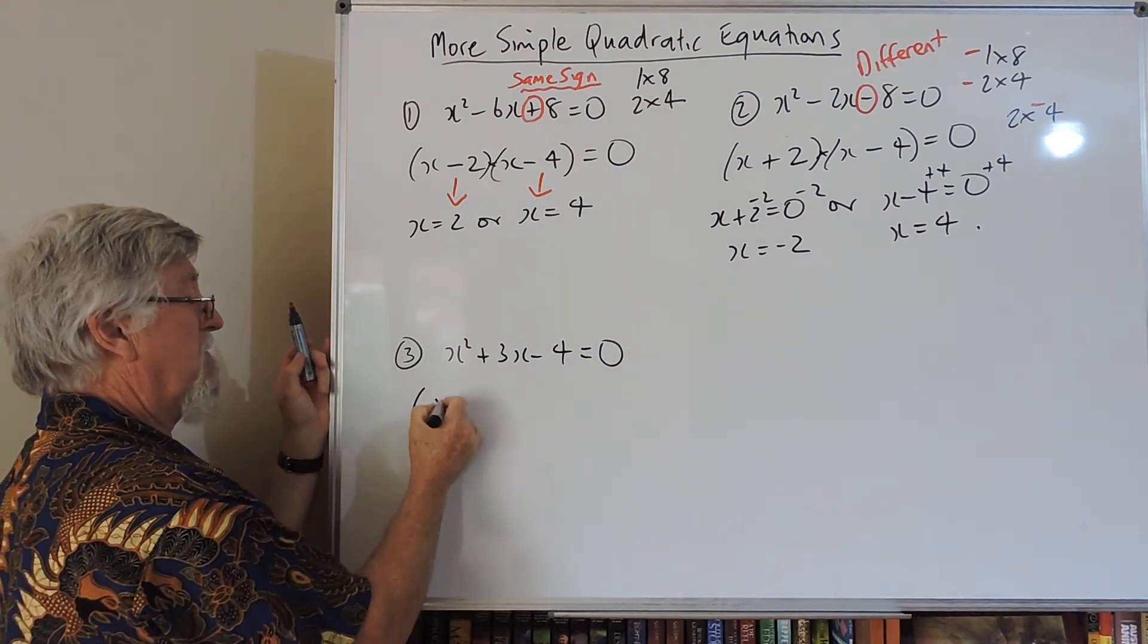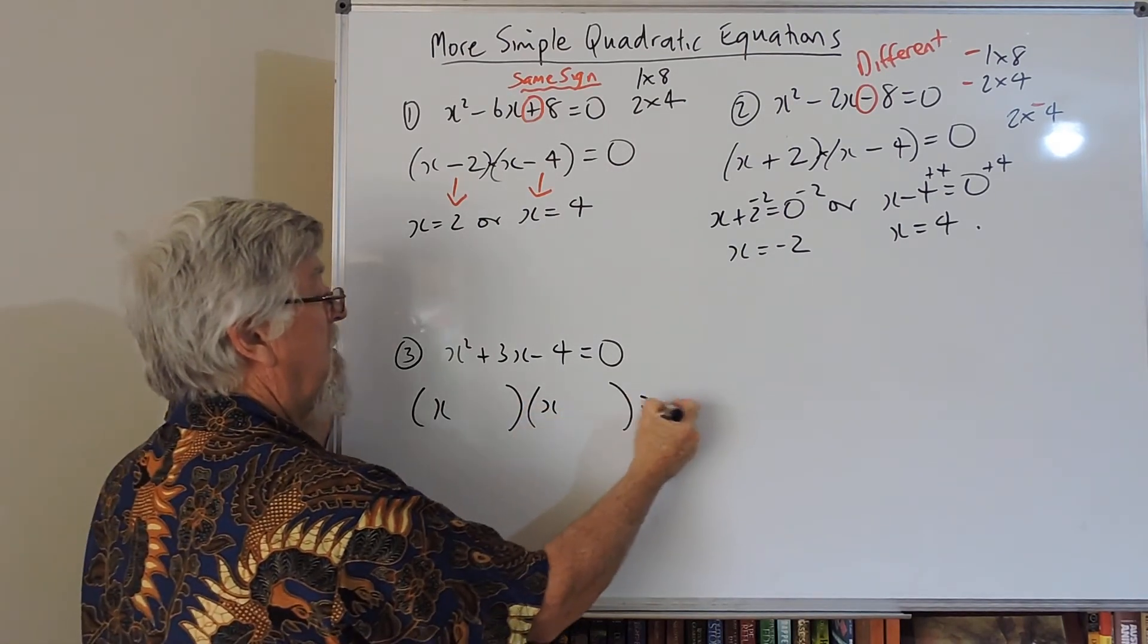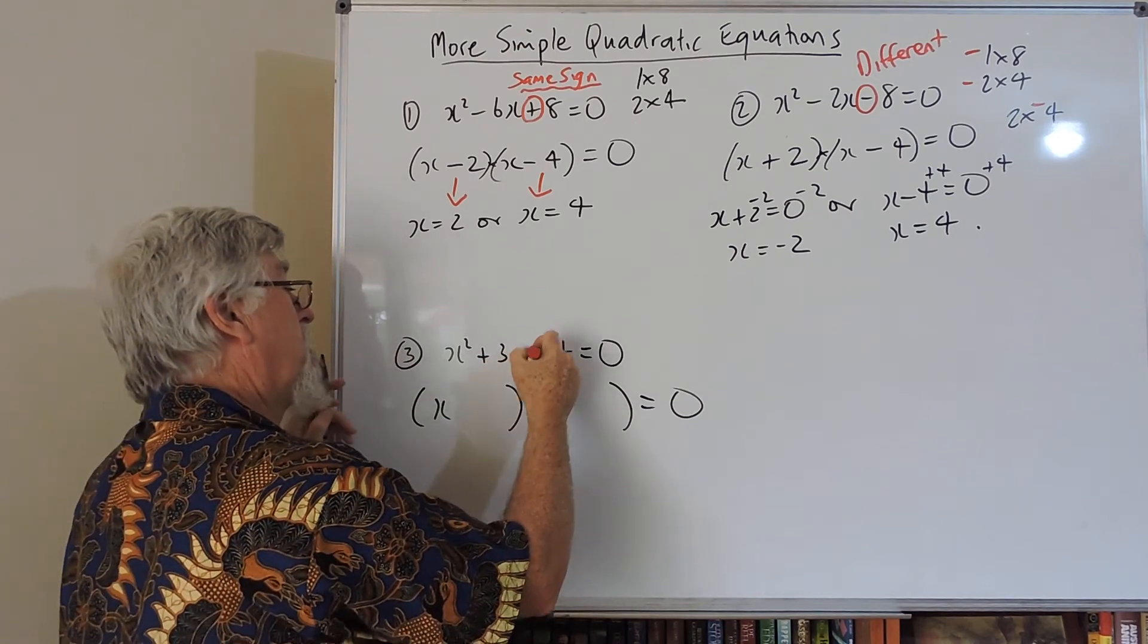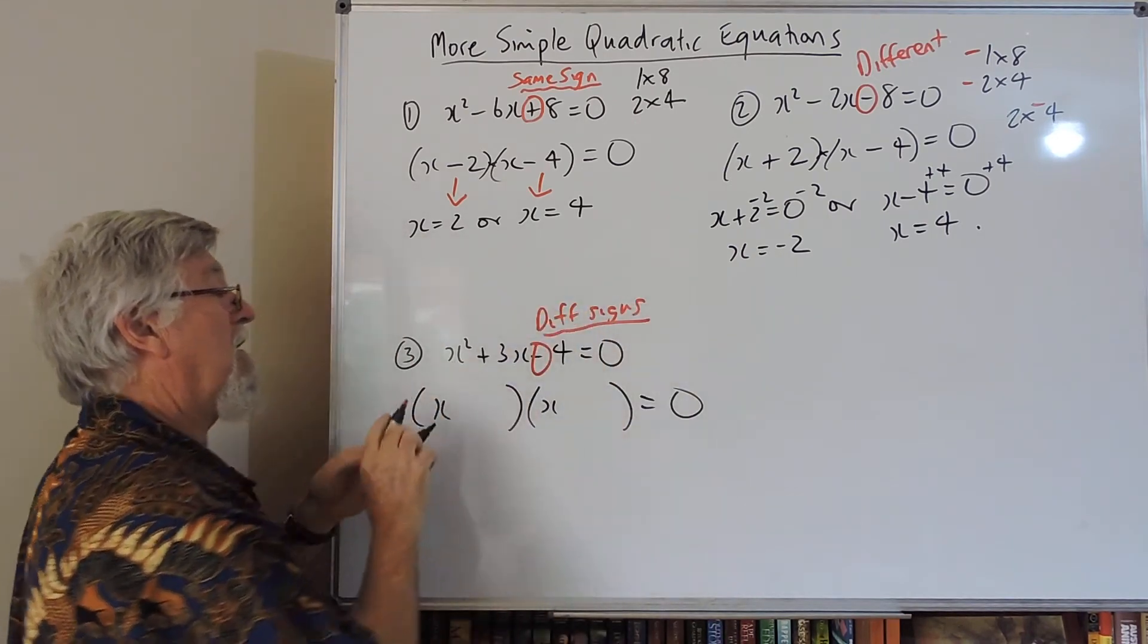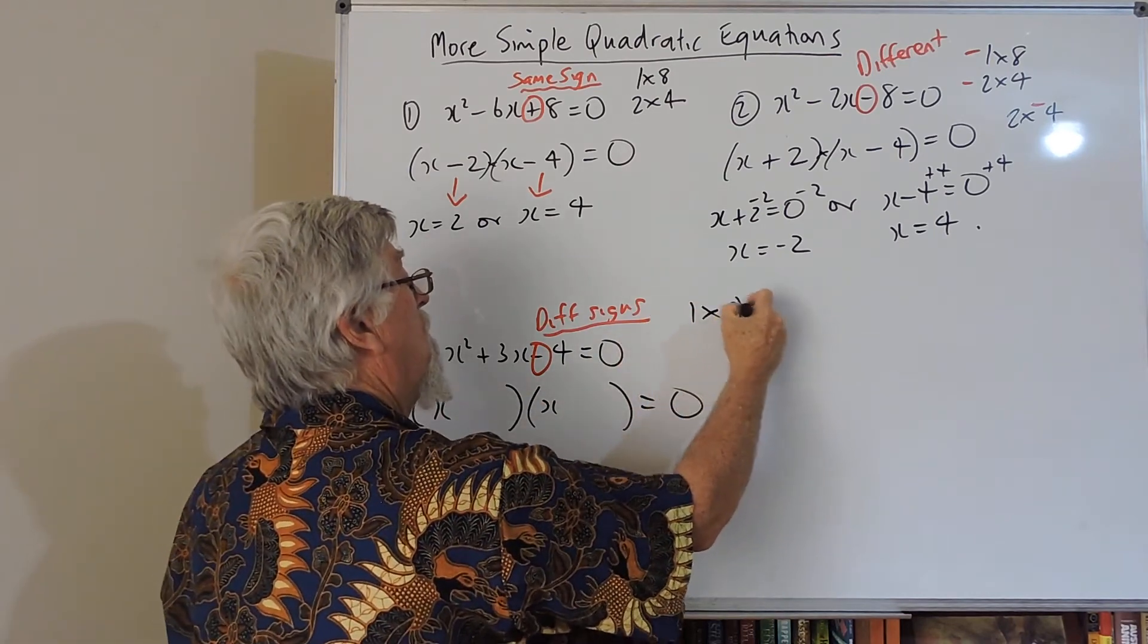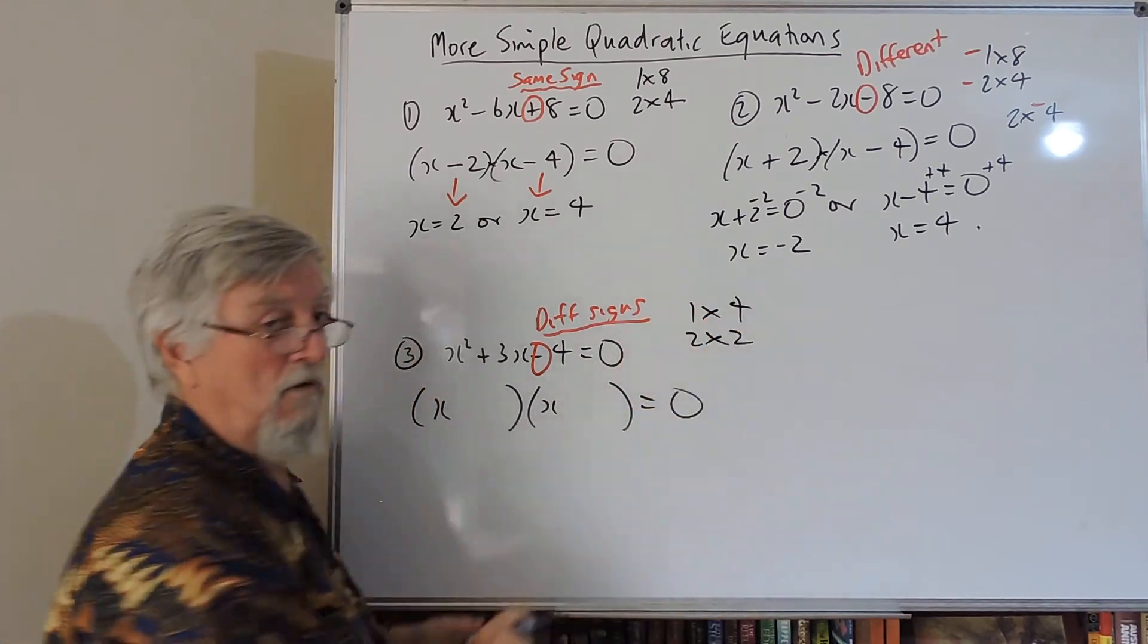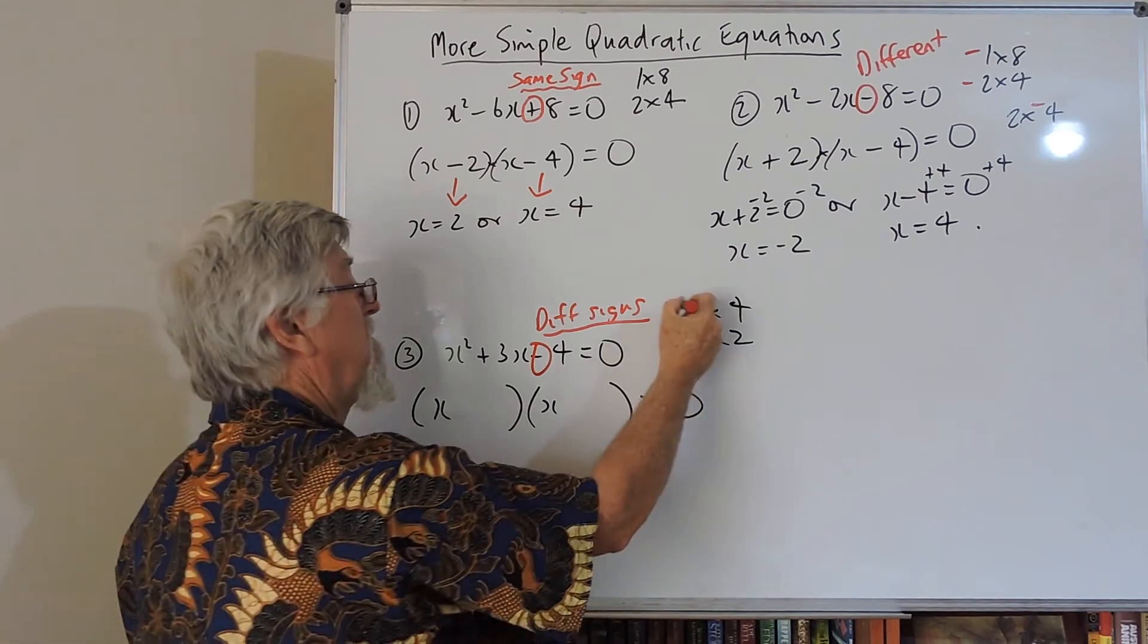And quicker. That's an x and that's an x. We need them to be different signs, different signs. I can get a 1 times a 4 or I can get a 2 times a 2. One of them has to be negative, so I could do that.